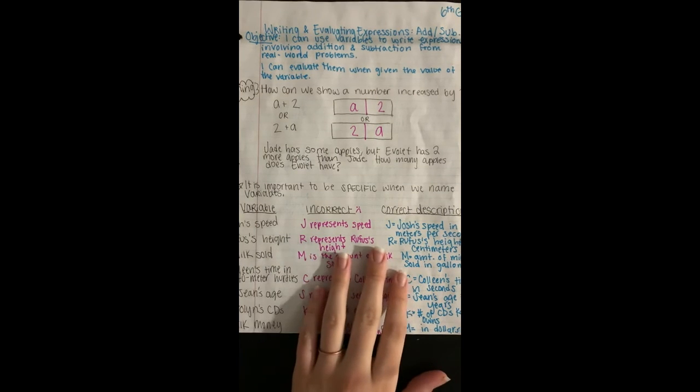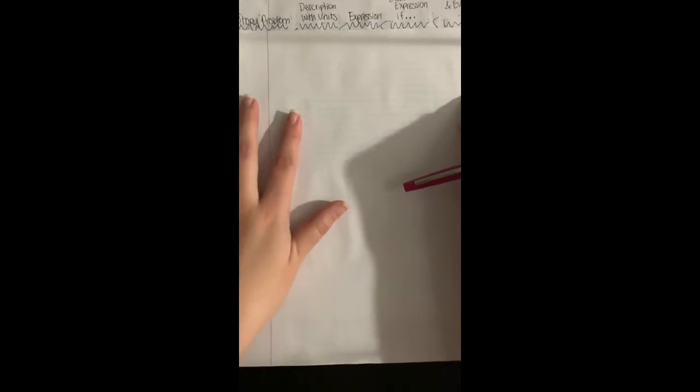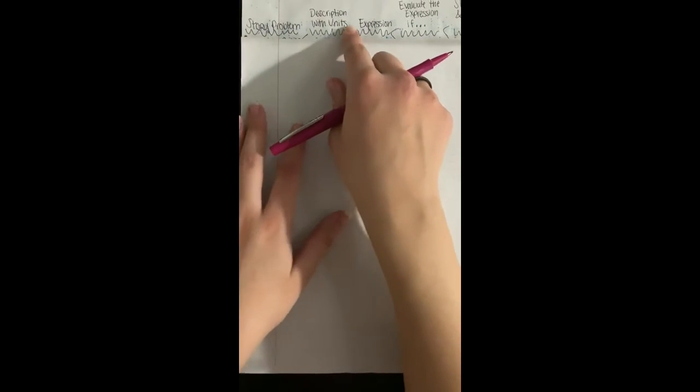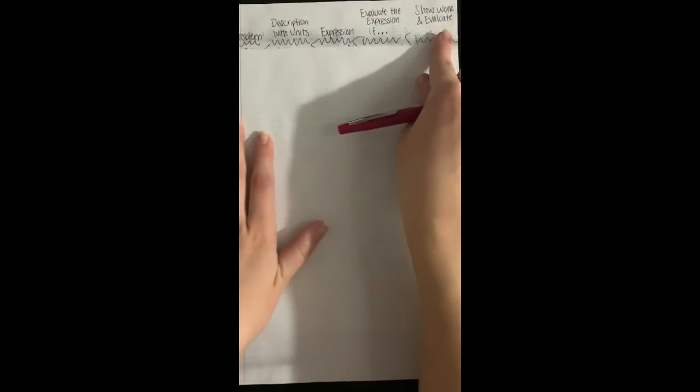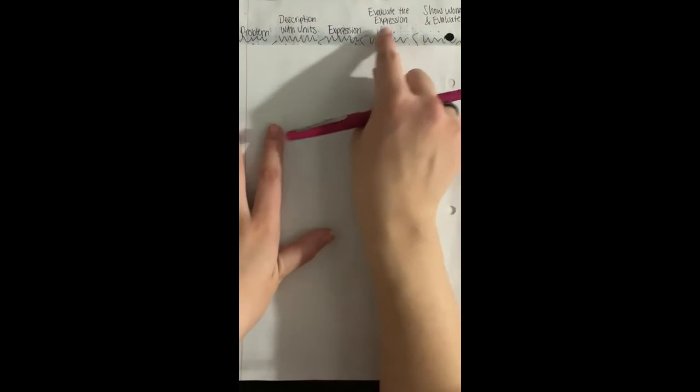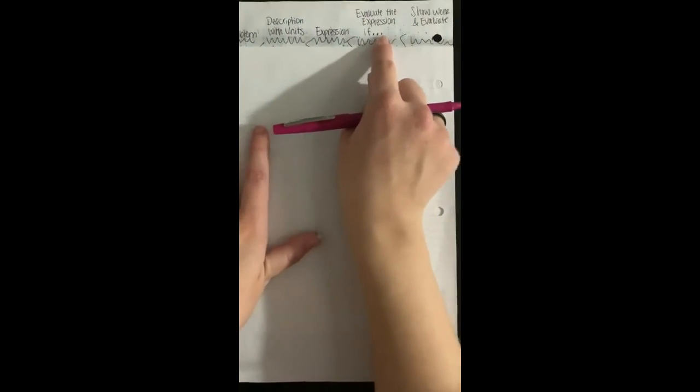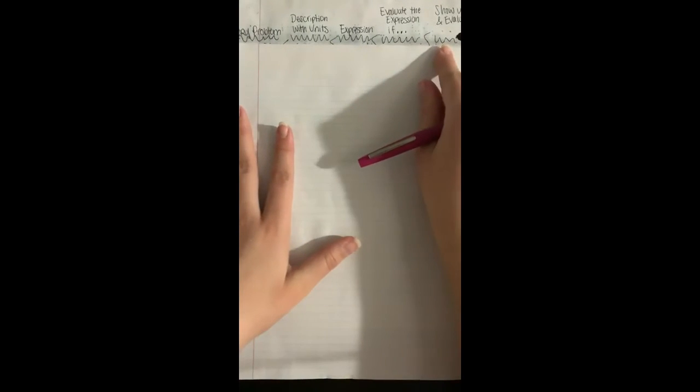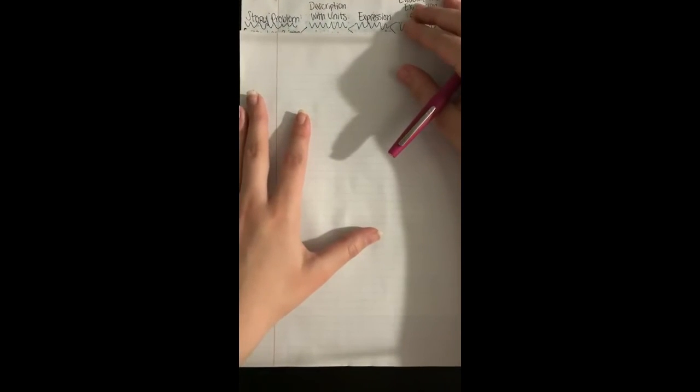Alright, so we're gonna flip our page over and we're gonna look at some word problems and creating some expressions that have variables from these word problems. So across the top of your paper you need to set up a chart. We're gonna turn our whole page into a chart. So we're gonna have the story problem, the description with units, the expression, evaluate the expression if dot dot dot, and then show work and evaluate.